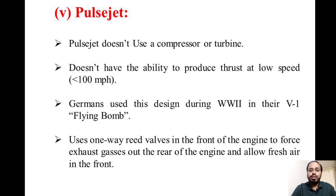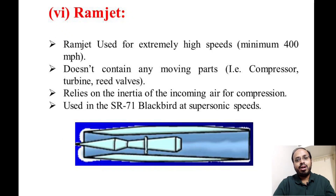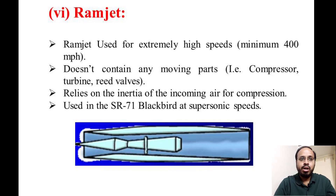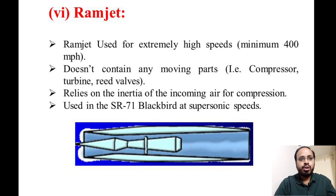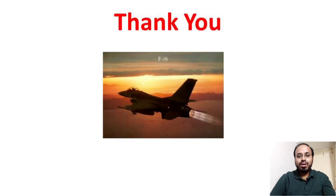The ramjet engine is used for extremely high speeds — a minimum of 400 miles per hour. It does not contain any moving parts, similar to the scramjet — no compressor or turbines — and relies on the inertia of incoming air for compression. It is generally found used in the SR-71 Blackbird at supersonic speeds.